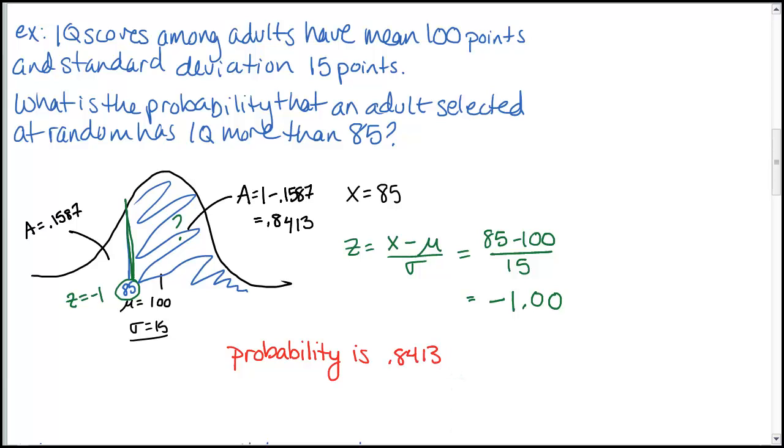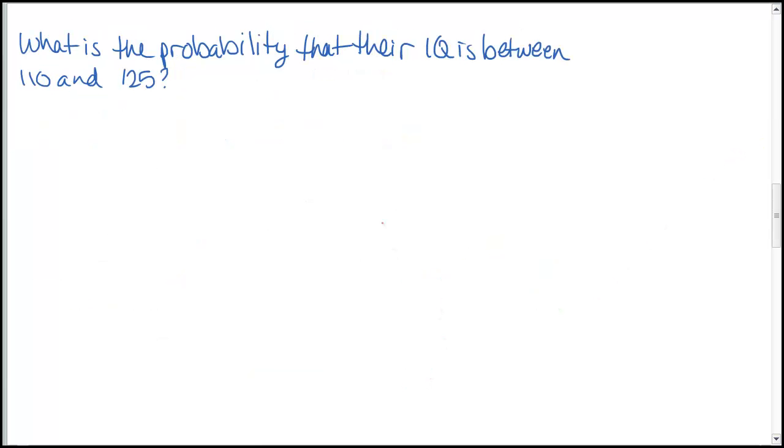And to answer this question, we would say that the probability of selecting someone at random and getting an IQ score more than 85 would be .8413. We're not computing this as a percentage because it was asking for a probability. Following along with the same data set, here we want to know what's the probability that a random person's IQ score is between 110 and 125.